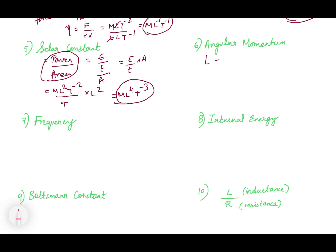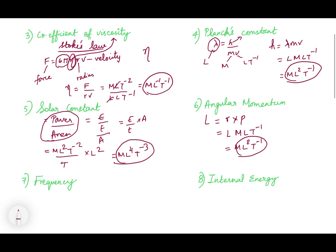Now angular momentum is represented by the letter L, and it equals R into P, where R is the radius and P is the momentum. L into momentum — momentum is mass into velocity, so mass × LT⁻¹. It becomes ML²T⁻¹. Now here I have to tell you something very important: Planck's constant and angular momentum have the same dimensions — both have ML²T⁻¹.